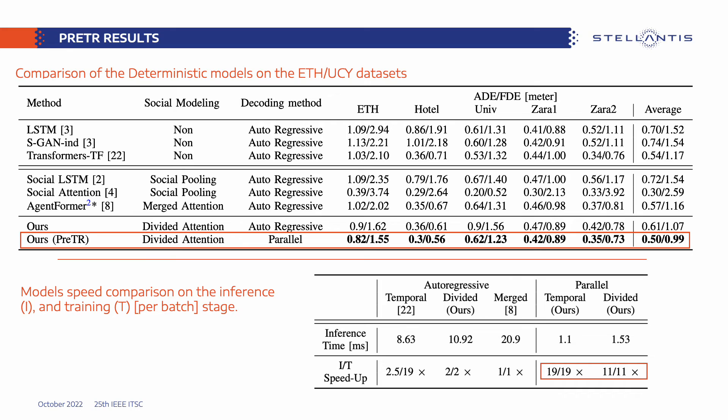Finally, we compared training and inference speedup with other variants. The divided attention is twice as fast as the merged attention, and the full model with parallel decoding is 11 times faster than autoregressive models.